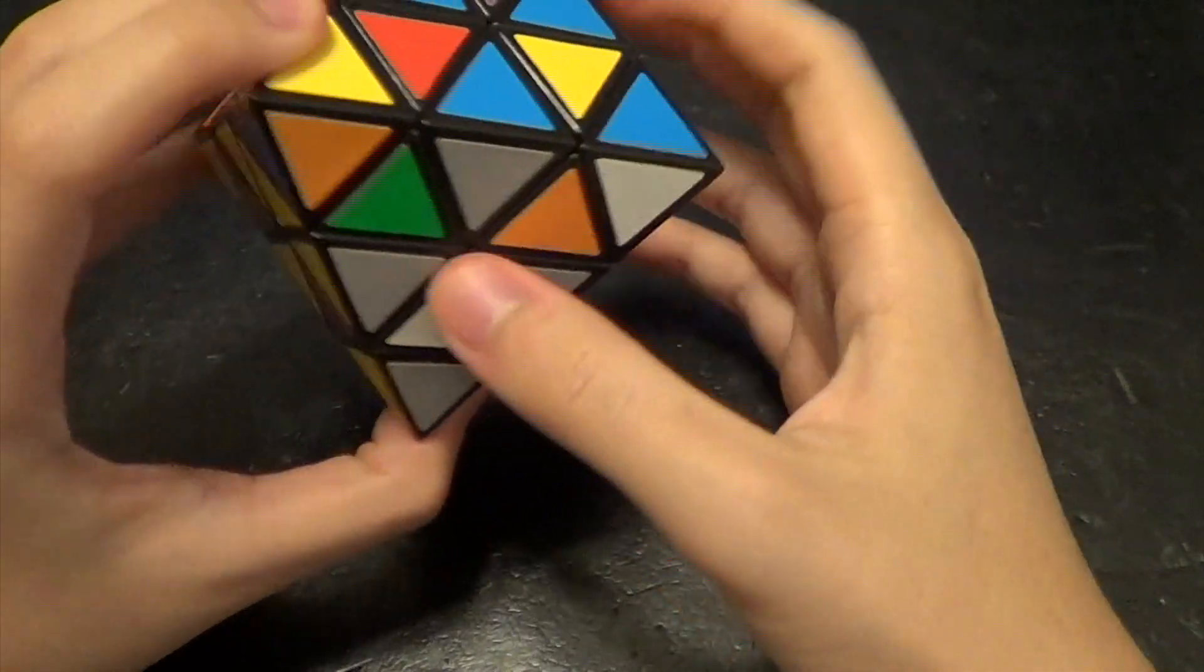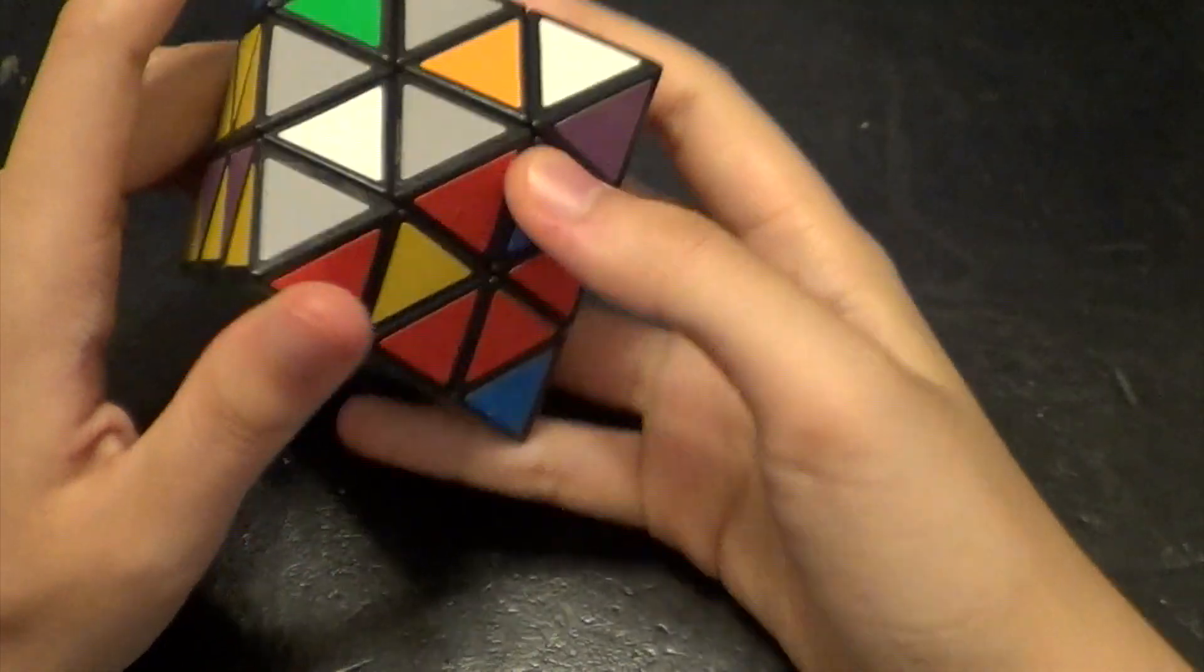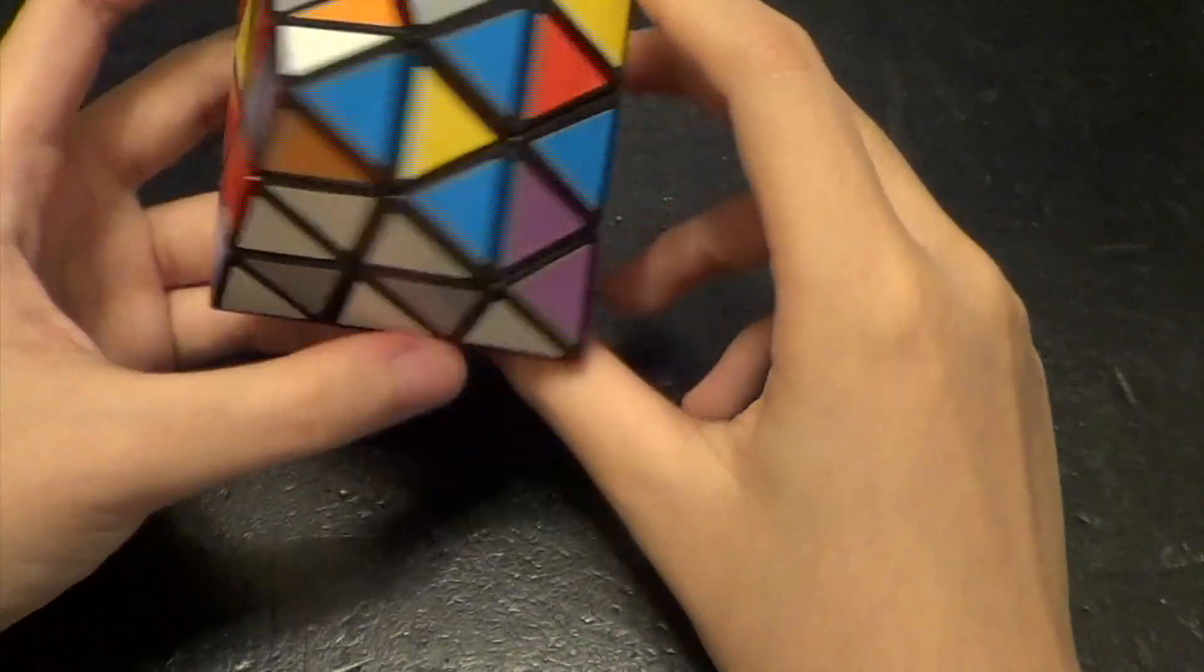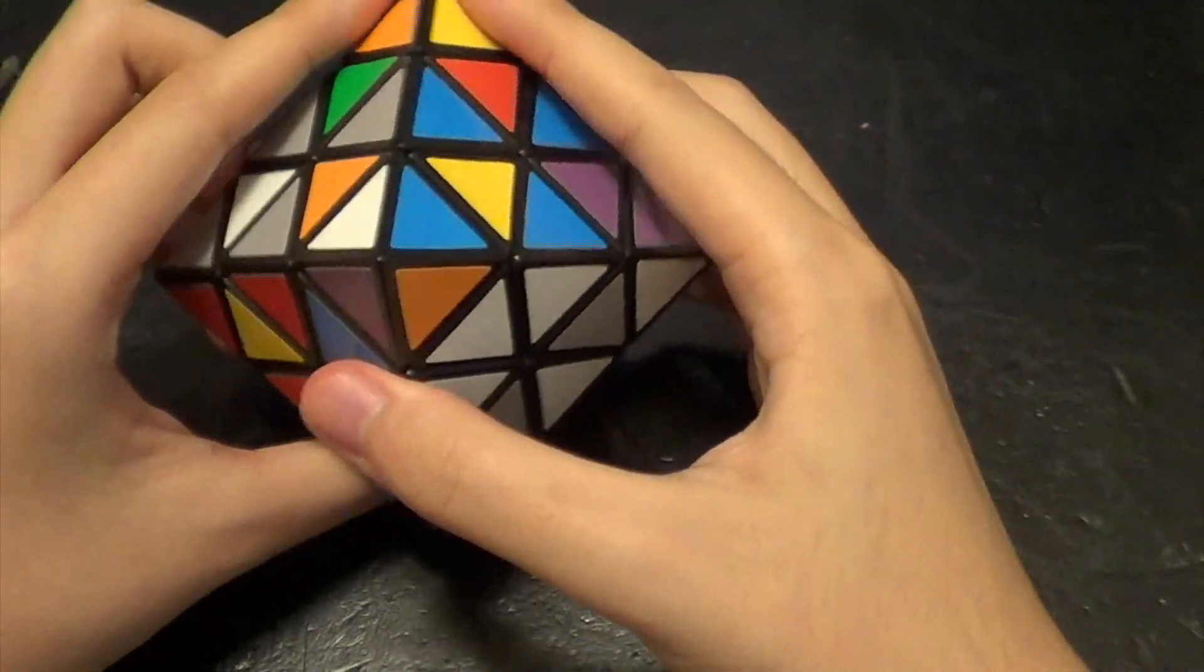So right now all we care about is just them being in the correct positions, but not necessarily the correct orientations. So these two are done for the time being, and then we can look for other corners that need to be placed.